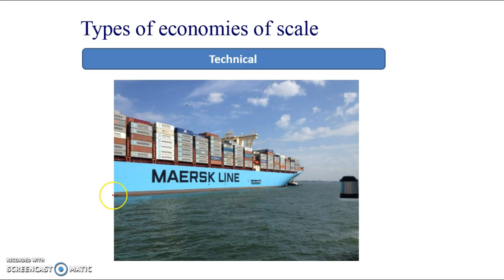Technical economies of scale: larger firms are able to employ more specialist equipment and can afford it. A larger ship won't necessarily cost twice as much to transport twice as many shipping containers. Rises in costs are less than proportional to the increase in output. And for smaller businesses, a sole trader might spend £400–£500 on a laptop they only use twice a week, whereas larger businesses get more use out of their equipment, so average costs fall.